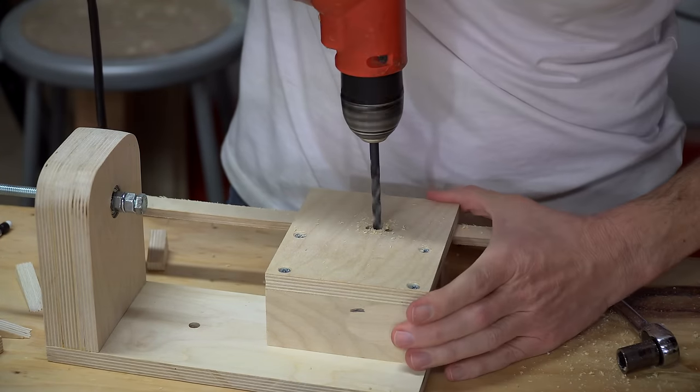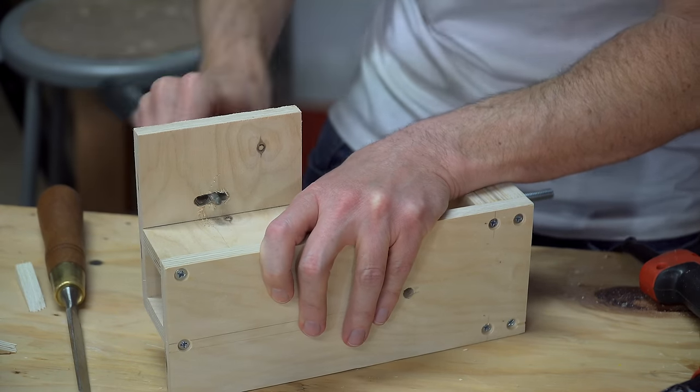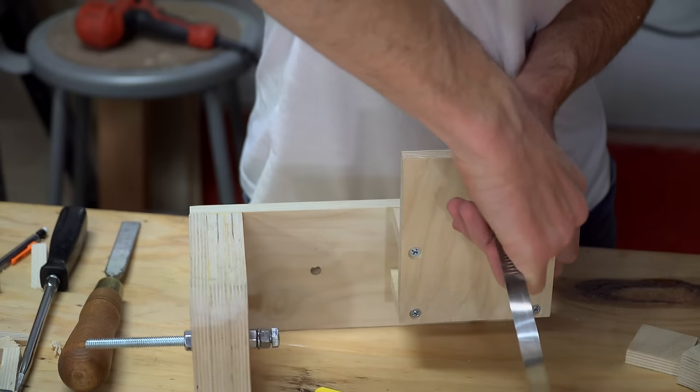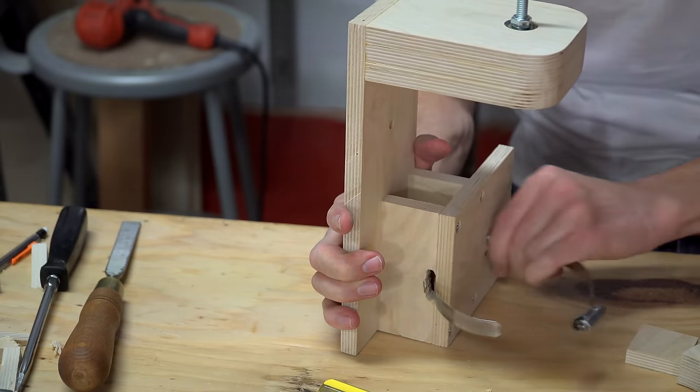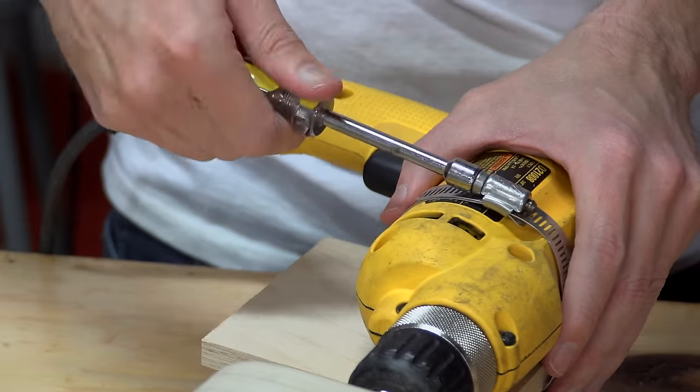To attach the drill to the platform, I just made a couple of slots in the platform, and then threaded a large diameter hose clamp through the slots. This hose clamp would then allow me to securely and easily attach the drill to the platform.